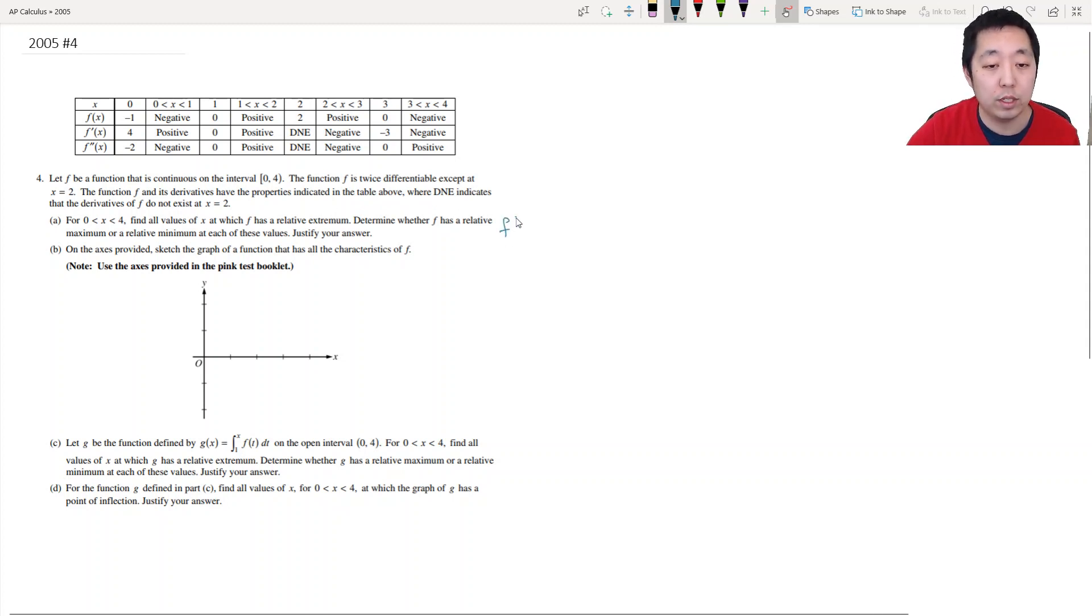So relative extrema or critical points are when the first derivative is 0. And when is the first derivative equal to 0? At 1, or does not exist. So I have x equals 1 or x equals 2, right here and here is when the derivative is 0. So now I got to check, I can use a second derivative test but if it's 0, it doesn't tell me anything. So I got to look for sign changes in the slopes.